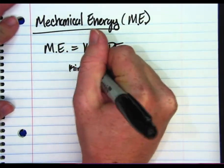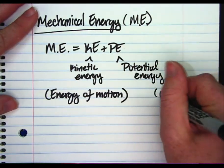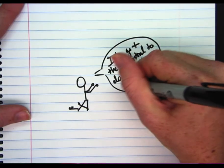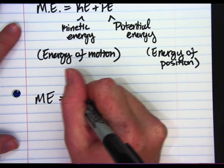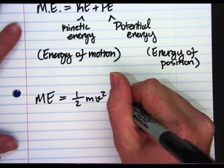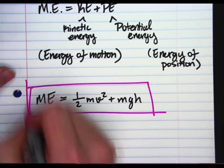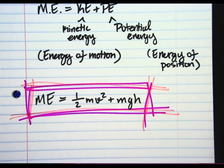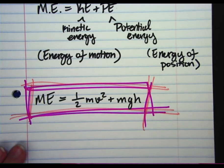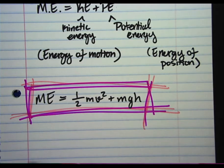Mechanical energy is defined to be kinetic energy — the energy of motion — plus potential energy, the energy of position. In formula form, ME equals KE plus PE, or more specifically, one-half m v squared plus mgh: one-half the mass of the object times the velocity squared, plus the mass of the object times the acceleration due to gravity times the height displaced.